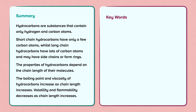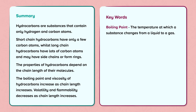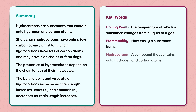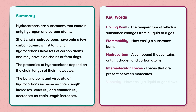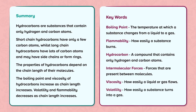Key words: Boiling point — the temperature at which a substance changes from a liquid to a gas. Flammability — how easily a substance burns. Hydrocarbon — a compound that contains only hydrogen and carbon atoms. Intermolecular forces — forces that are present between molecules. Viscosity — how easily a liquid or gas flows. Volatility — how easily a substance turns into a gas.